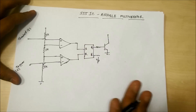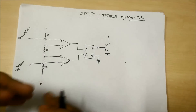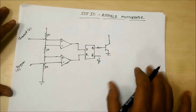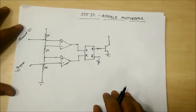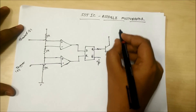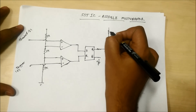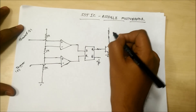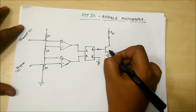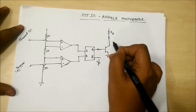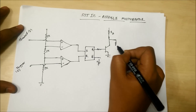This is the basic block diagram of the 555 timer IC. Now we connect some external resistances to understand how it works as an astable multivibrator. From VCC we connect a resistance RA. In monostable we connected a capacitor directly in parallel with the transistor, but in astable we connect the capacitor through a resistance RB.